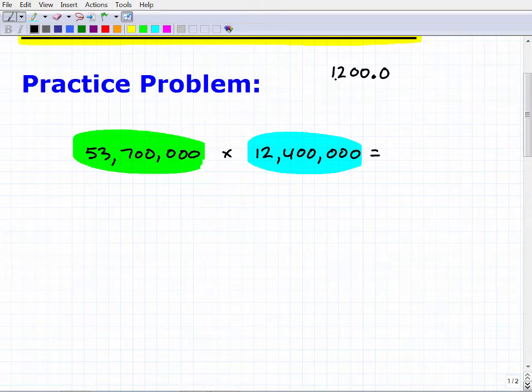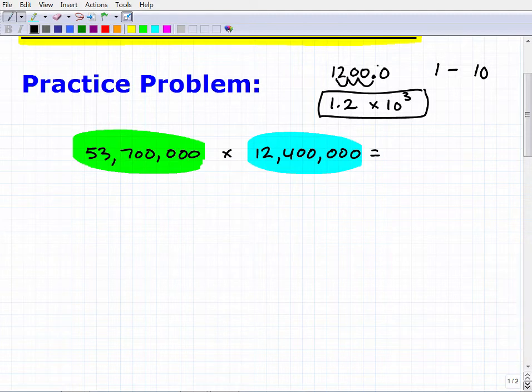Now what we want to do in scientific notation is to move the decimal point such that we take the digits here, and this is the number, which is one, two, zero, zero, and we want to form a new number between one and ten. It actually has to be less than ten. So what we're going to do is we're going to move this decimal point this way, one, two, three. Okay, so now I have a number one point two. You can see that that falls in between one and ten. It's got to be less than ten and at least one.